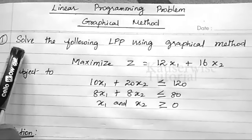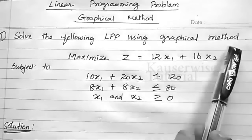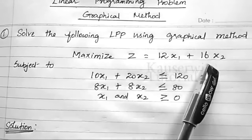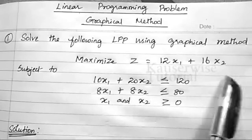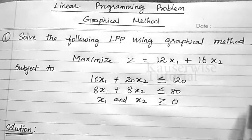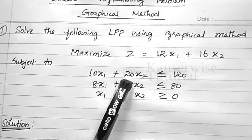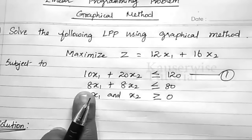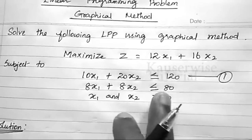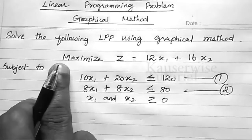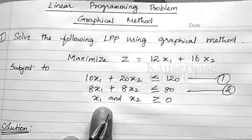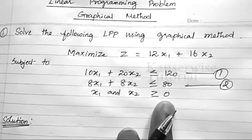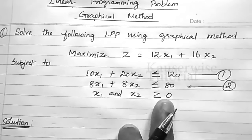Let us look at the first problem: solve the following LPP using the graphical method. Maximize Z equals 12x1 plus 16x2. This is the objective function. Subject to two constraints: first, 10x1 plus 20x2 less than or equal to 120, and second, 8x1 plus 8x2 less than or equal to 80. The values of x1 and x2 must be greater than or equal to zero.